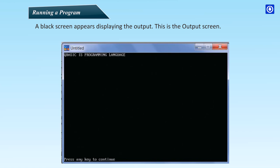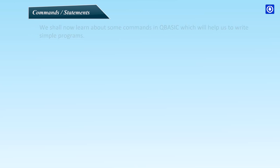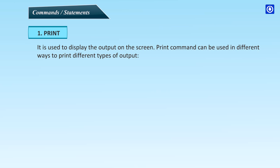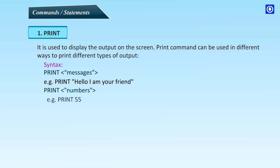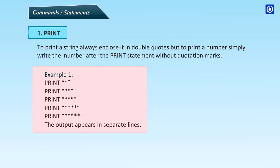Commands and statements: we shall now learn about some commands in QBasic which will help us write simple programs. PRINT: it is used to display the output on the screen. The PRINT command can be used in different ways to print different types of output. Syntax: PRINT message. Example: PRINT "Hello I am your friend". To print numbers, example: PRINT 55. Press F5 to run the program. To print a string, always enclose it in double quotes, but to print a number, simply write the number after the PRINT statement without quotation marks.